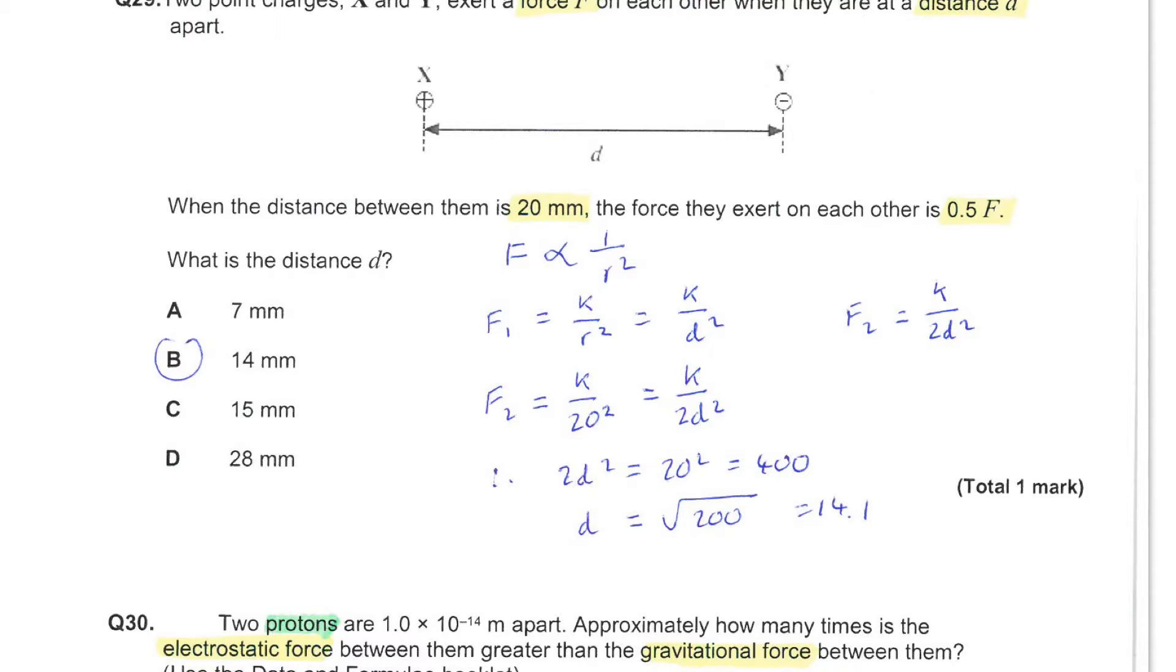Now going back to the more general equation that the force is a constant divided by the separation squared gives me this expression. So F2 equals K divided by 20 squared, but I know it's also half of the value for F1 which is given by this expression. Putting the two together gives me an equation to solve in terms of D. So 2D squared is equal to 20 squared, and that is therefore 400, and D is 14.1.